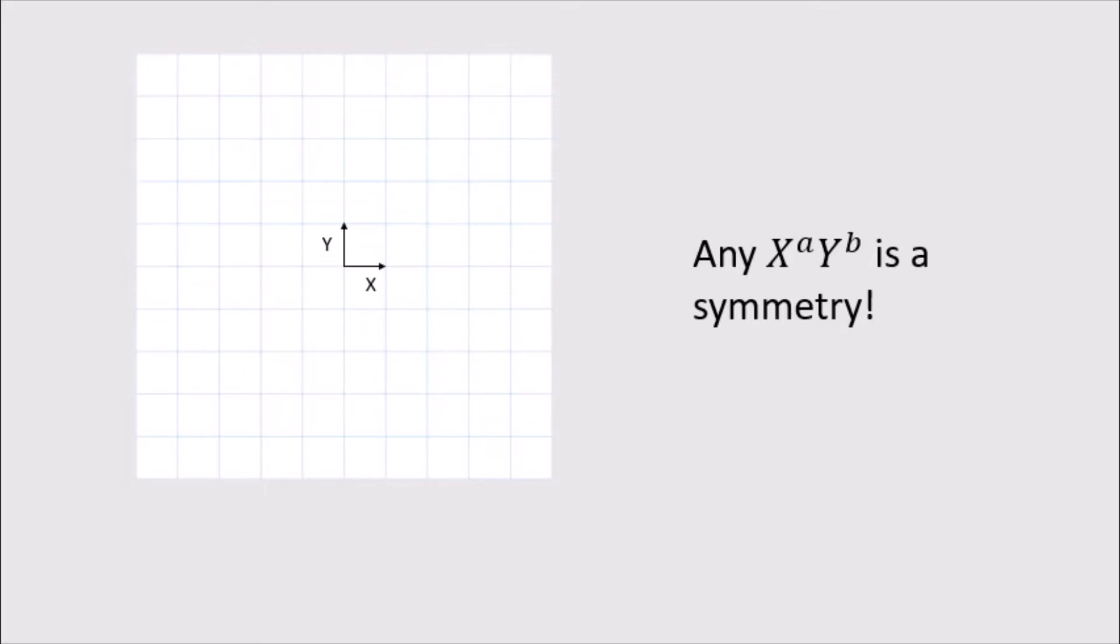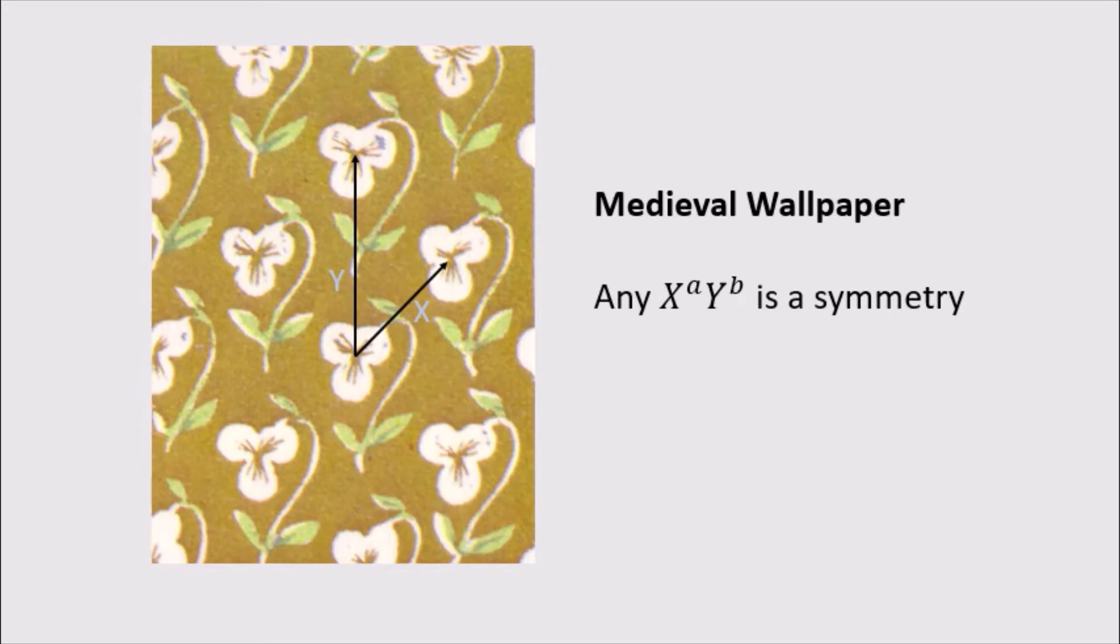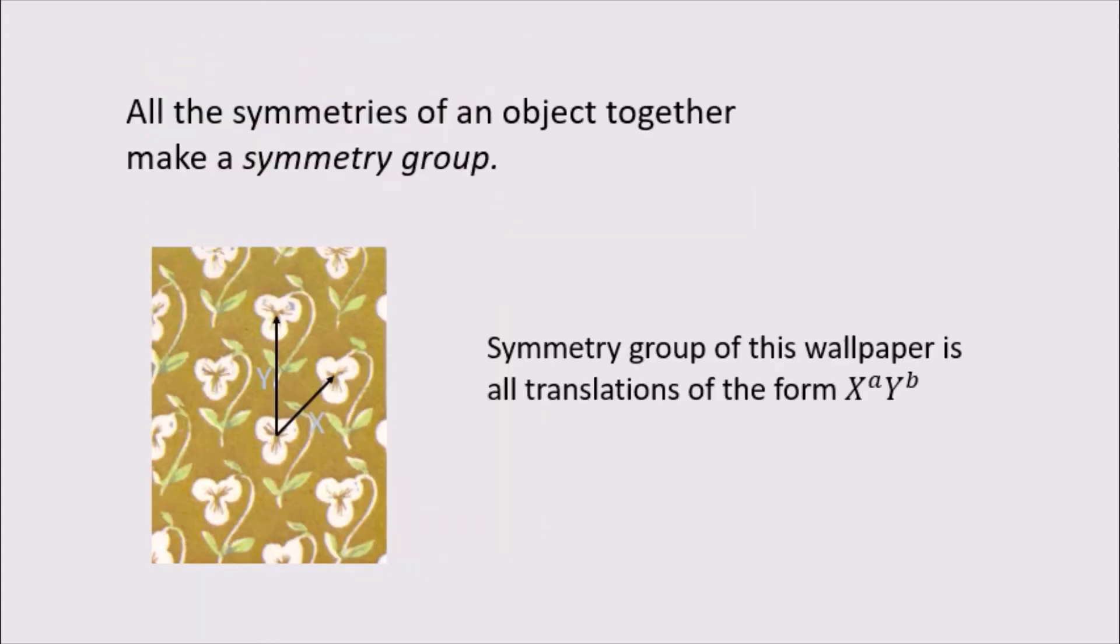And in fact, this kind of translational symmetry applies not just to square grids, but also things like this medieval wallpaper, where we can translate it along x or y, or any combination of the two, and get a symmetry of the wallpaper. Looking closer, we see that the flowers themselves are asymmetrical. So we can't really rotate or reflect this wallpaper to get a symmetry that way. Another way to say this is that the combination of translations x and y form the symmetry group of the wallpaper.